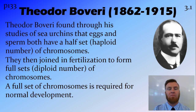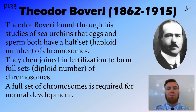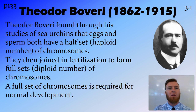On to Theodore Boveri. He was a German biologist who spent a lot of time studying sea urchins. One of his discoveries is that eggs and sperm both have a half set of chromosomes — we now refer to this as the haploid number, being half the normal number. He also noticed that during fertilization, when the sperm penetrates the egg, those cells go on to form full sets of chromosomes, which we now call the diploid number. He also noticed that a full set of chromosomes is required for normal development; missing or extra chromosomes are associated with a whole range of birth defects.